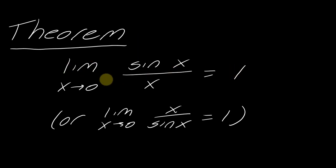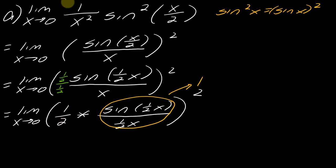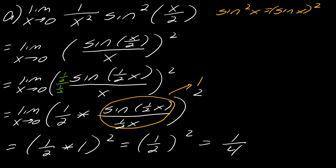I talked about this in my other example video, so check that out if you want more practice. I've got one half x and one half x, so the entirety of that piece goes to one — not one half, the theorem says it clearly goes to one. So this part goes to one, and this part is still one half. So I can evaluate this limit: it's really one half times one, and I still have to square all of this. So now I just need to square one half, and the value of this will be one fourth.